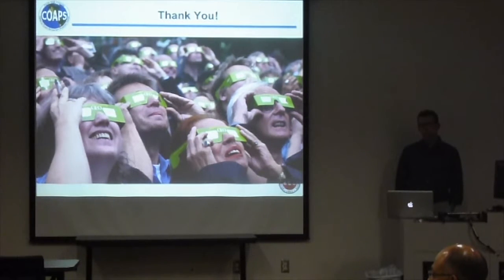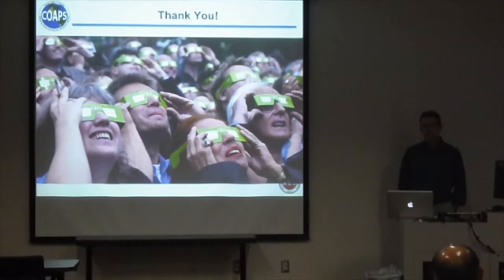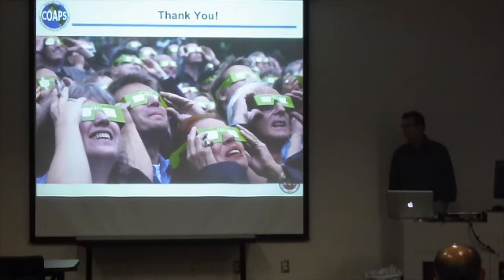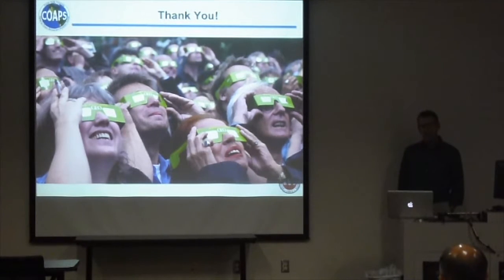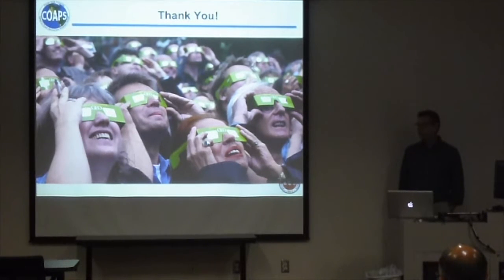An audience member added an interesting fact: between 1917 and 2117, Tallahassee will have a total of four eclipses, more than any other location on Earth. The speaker noted there was one in 1970, recalling they would have been about six years old and living in Panama City at the time, but doesn't remember it or any road trips to see it.